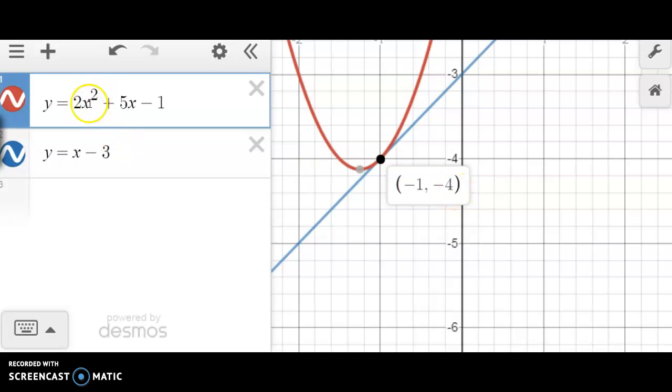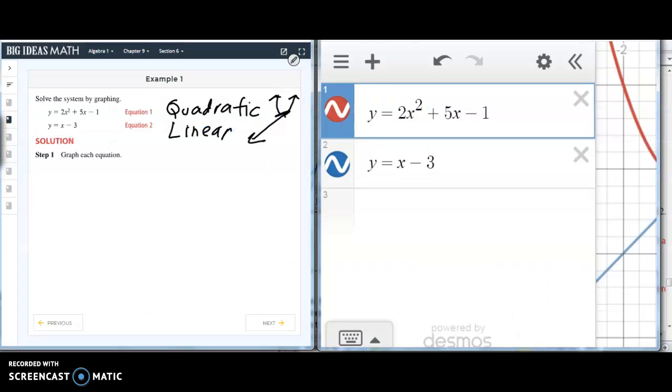How about here? If you square negative 1, you get 1 times 2. It's still 2. And then 2 minus 5 will be negative 3. And then negative 3 minus 1 is negative 4. So since this ordered pair, which represents the intersection of the two graphs, satisfies both equations in the system, then you know that it is correct, it is the solution.